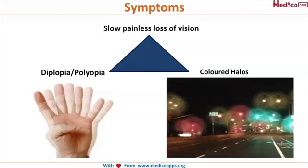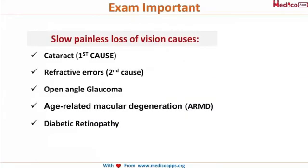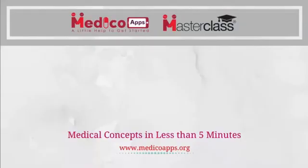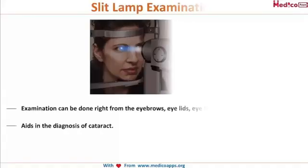We have seen what happens with colored halos in our glaucoma classes, including the Fincham's stenopeic slit test. These colored halos can be differentiated from those of glaucoma and acute mucopurulent conjunctivitis. A quick revision: causes of slow painless loss of vision include cataract, refractive errors, open-angle glaucoma, ARMD, and diabetic retinopathy. The most common is cataract, succeeded by refractive errors.